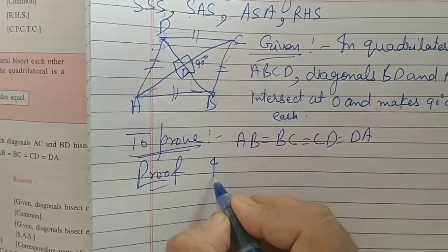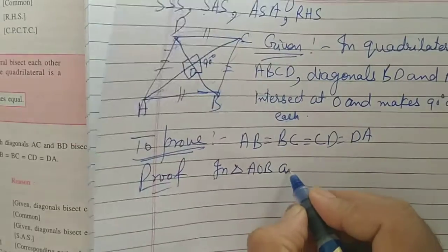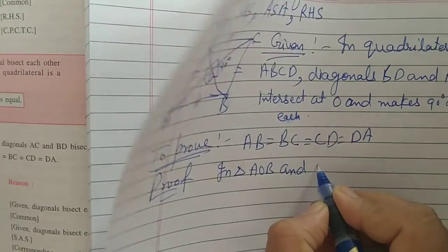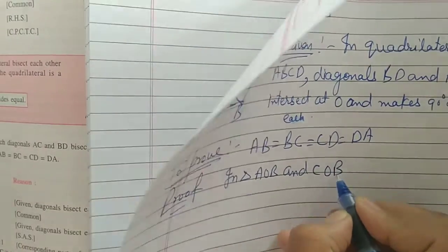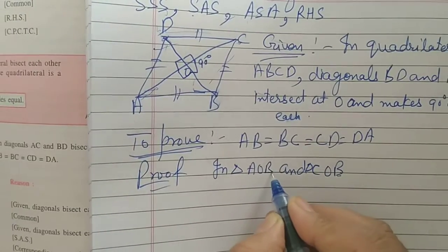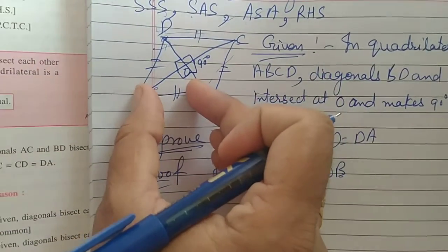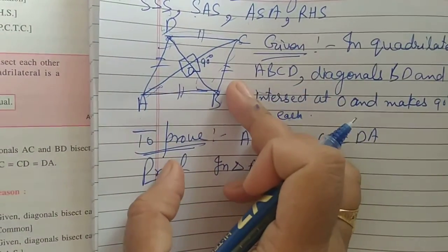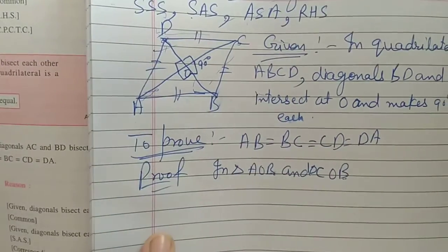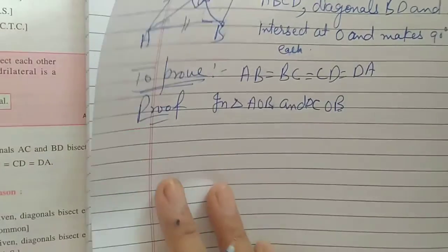So, here I will take triangle AOB and COB. This last point is B, here also B will be there. Because when you will put this triangle on this triangle, all the points should be matched. Superimpose means it should be covered completely on top.